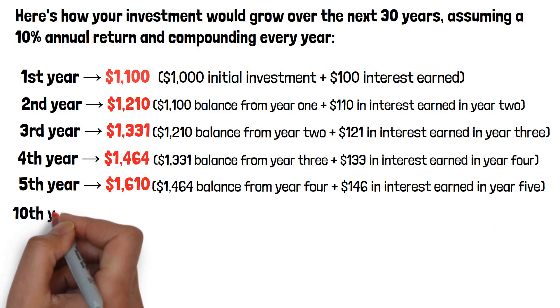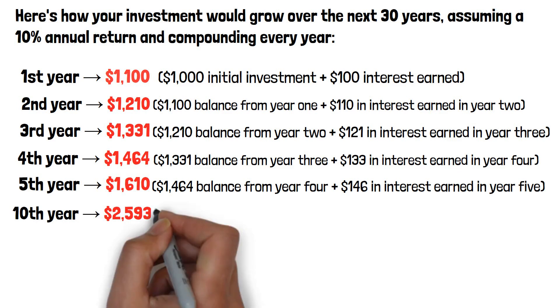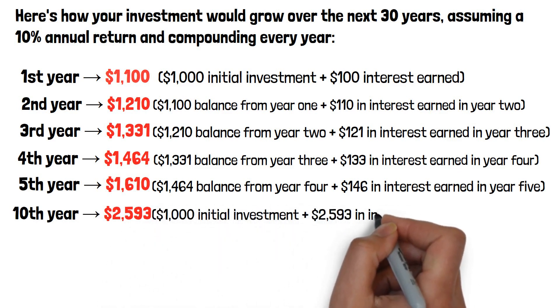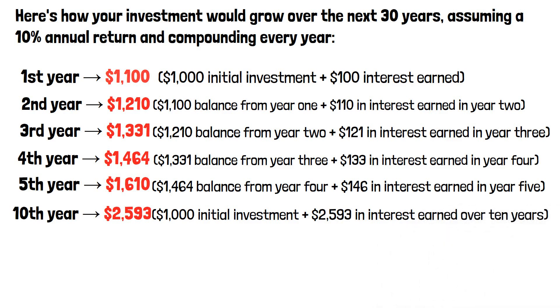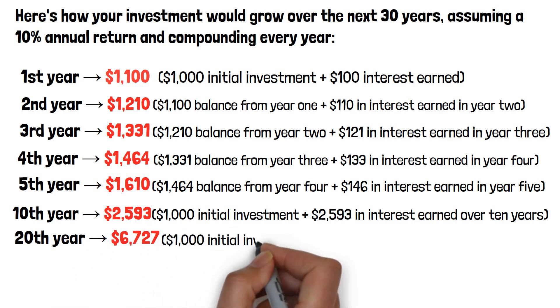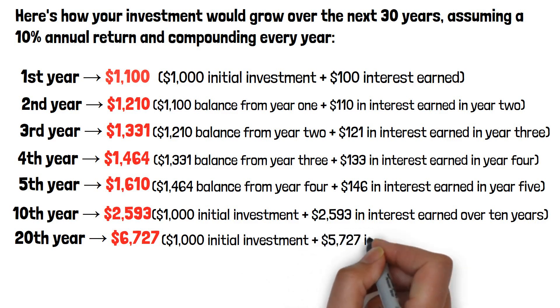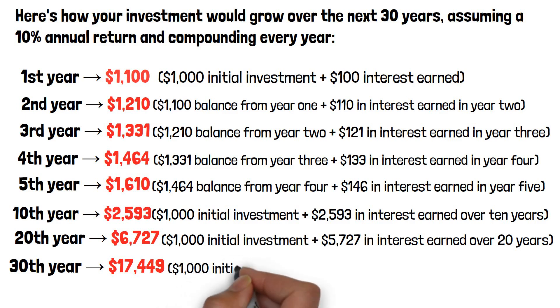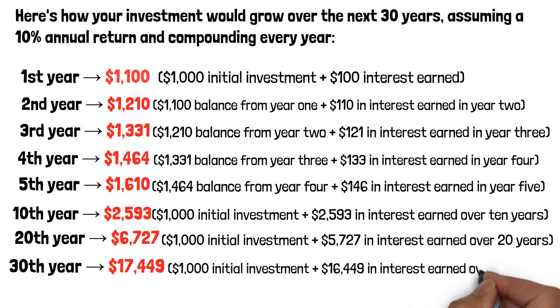After the tenth year, your investment would be worth $2,593 - $1,000 initial investment plus $2,593 in interest earned over 10 years. After the twentieth year, your investment would be worth $6,727 - $1,000 initial investment plus $5,727 in interest earned over 20 years. After the thirtieth year, your investment would be worth $17,449 - $1,000 initial investment plus $16,449 in interest earned over 30 years.